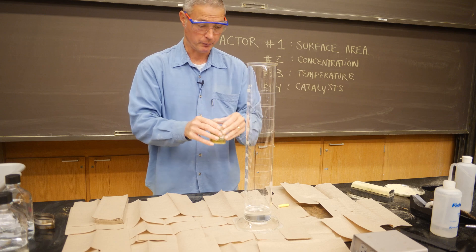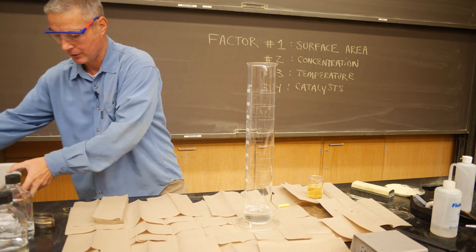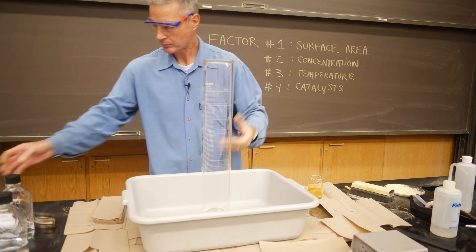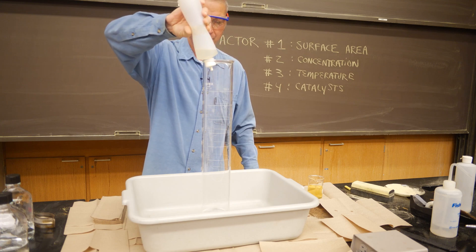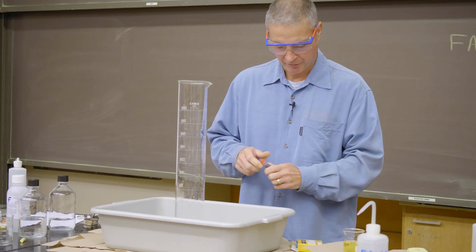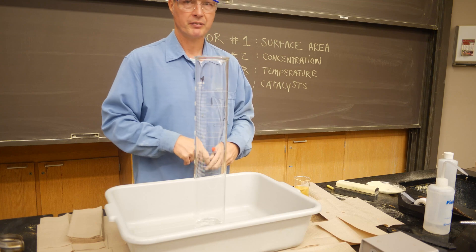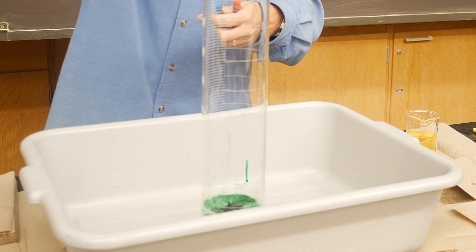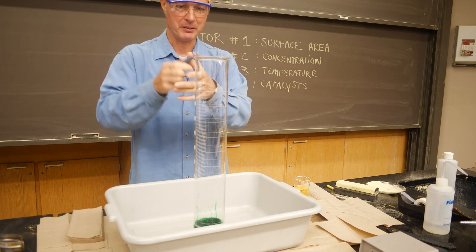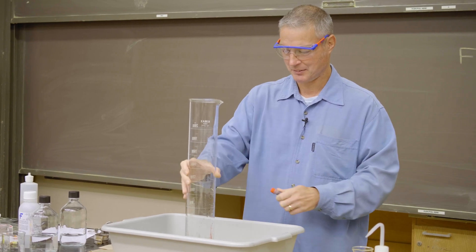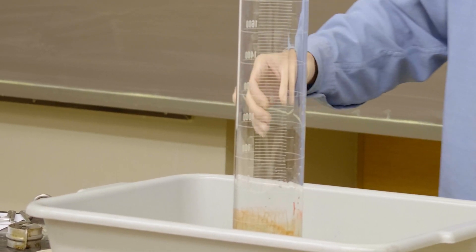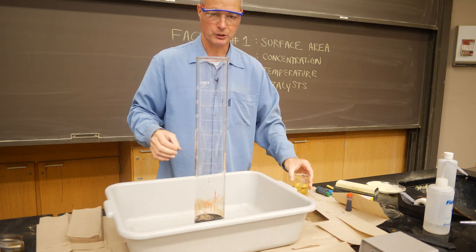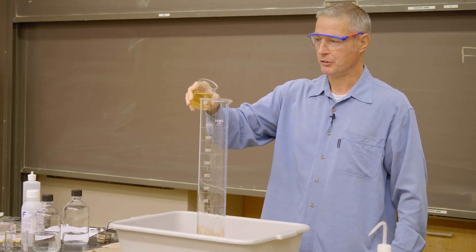Potassium iodide is a catalyst for this reaction. I'm going to do it in this tub — you'll see why — and these paper towels are here for a reason too. To catch the bubbles, I'll put a little bit of soap in there to trap the oxygen that's produced. And to make it a little festive, we'll add some color — looks like reddish-brown-orange. Okay, three, two, one!